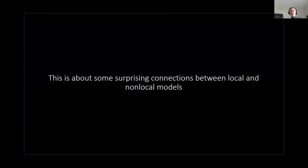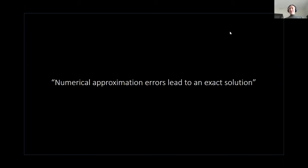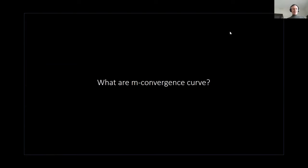This is really about what we found to be surprising connections between local and non-local models. If I were to choose a different title for this talk, I probably would have called it 'How numerical approximation errors lead to an exact solution,' which is a very strange thing. For a while, many people were not sure that we had things right. But let's discuss what we call m-convergence curves.